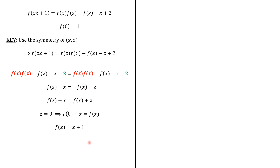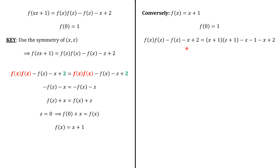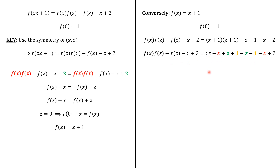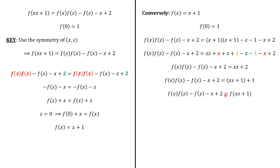That's interesting, but we should make sure that this function works indeed. So, conversely, if f(x) = x + 1, then f(0) = 1. We check that the equality holds: f(x)·f(z) minus f(z) minus x plus 2 expands to xz + x + z + 1 minus z minus 1 minus x plus 2. The terms of the same color cancel each other, leaving xz + 2, which we write as xz + 1 + 1, and this is f(xz) + 1. So the function works.